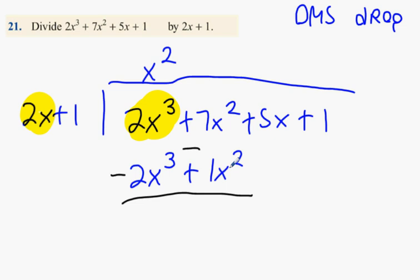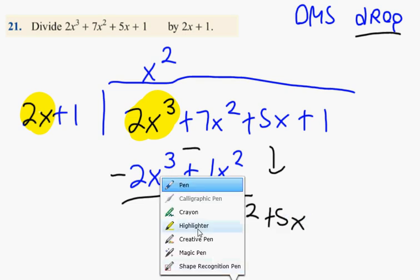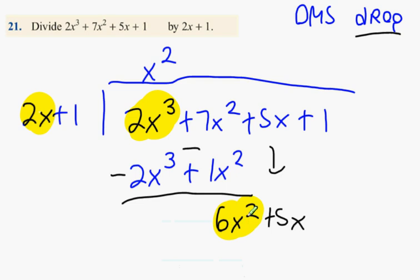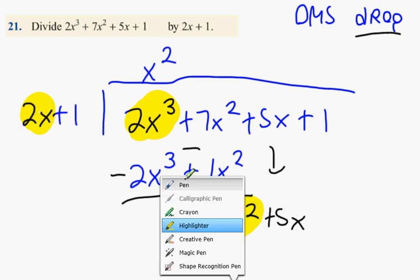What happens when you subtract 7x squared minus 1x squared? What do we do next? Okay. Go again. 6x squared gets divided by? So what do you get? 3x.